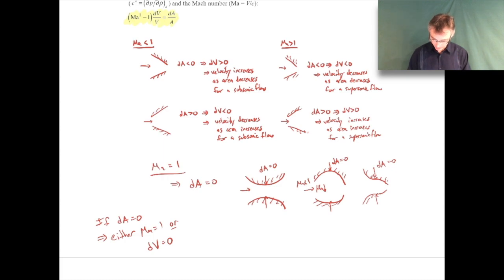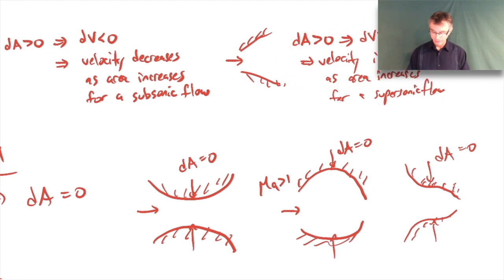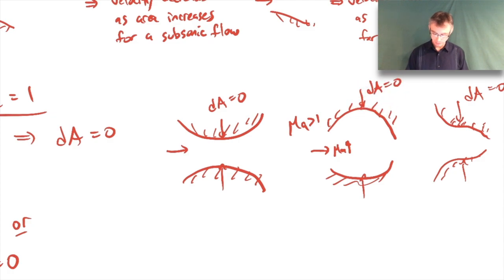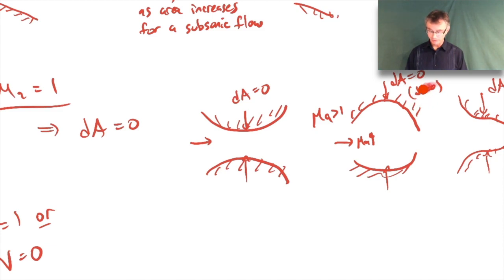Similarly, if the incoming flow were supersonic entering this maximum area case, the Mach number starts increasing - we also diverge away from M = 1 in that direction. So at the point of maximum area, again dV = 0, not M = 1. This maximum area system always diverges from M = 1, so it can never get us there.